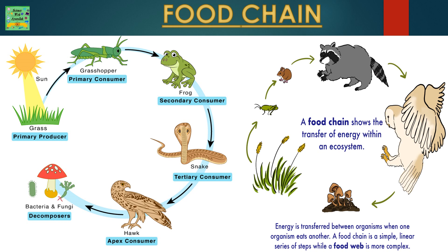Here is an example of a food chain. Grass is a primary producer. Grasshopper eats the grass, so it's a primary consumer. Frog eats the grasshopper, so it's a secondary consumer. Snake eats the frog, so it's a tertiary consumer. Hawk consumes the snake, so it's an apex consumer. Bacteria and fungi decompose the hawk's body, so they are decomposers.